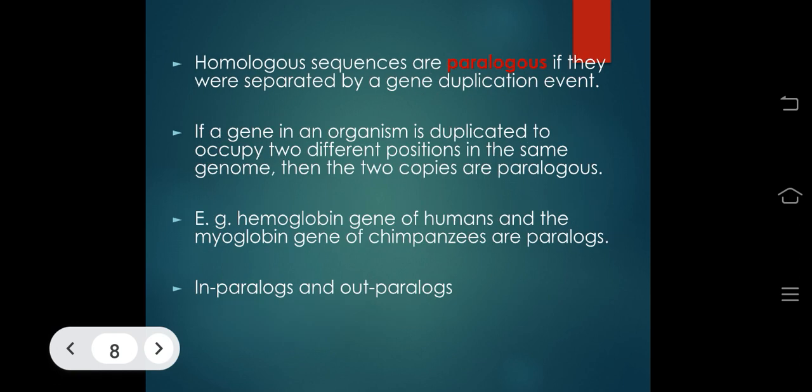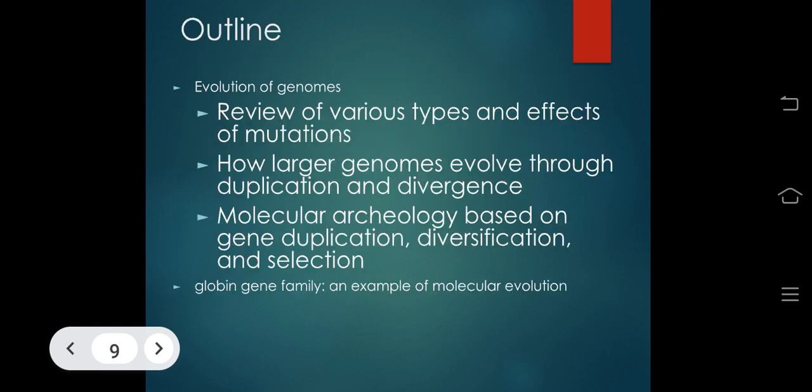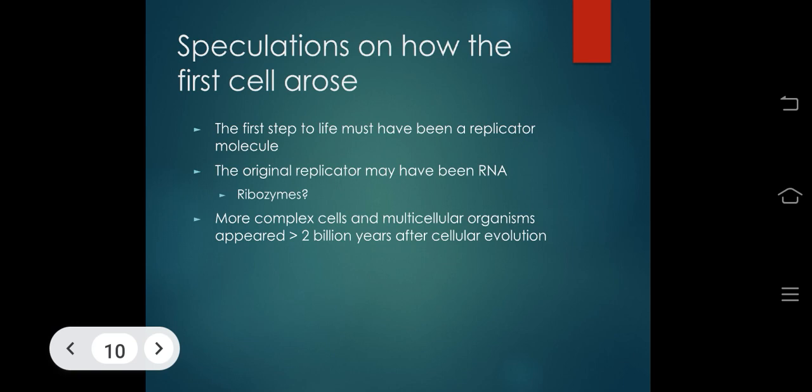Paralogous sequences are homologs separated by a gene duplication event. If a gene is duplicated to occupy two different positions in the same genome, the two copies are paralogous. For example, hemoglobin genes of humans and myoglobin genes of chimpanzees are paralogous. Genome evolution involves various types of mutations, and larger genomes evolved through duplication and divergence — demonstrated by the globin gene family as an example of molecular evolution.